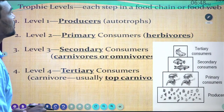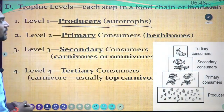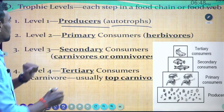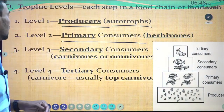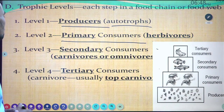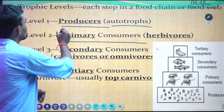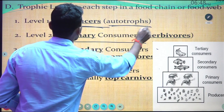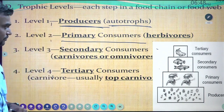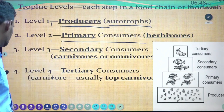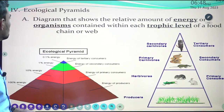Trophic levels: each step in a food chain or food web. Level one is the producer — autotrophs. Then primary consumers — herbivores. Then secondary consumers — carnivores or omnivores. Then tertiary consumers. The producer category includes autotrophs, and likewise from first to fourth level you need to know those terms.